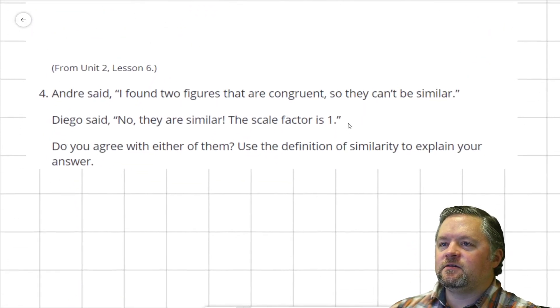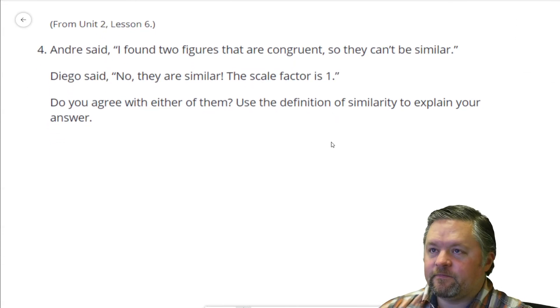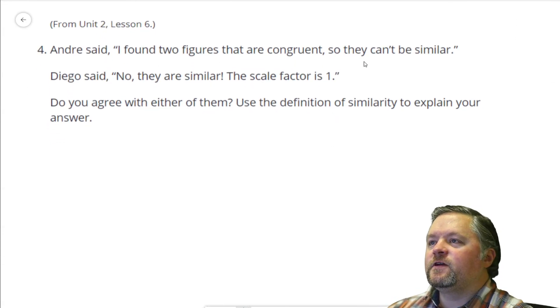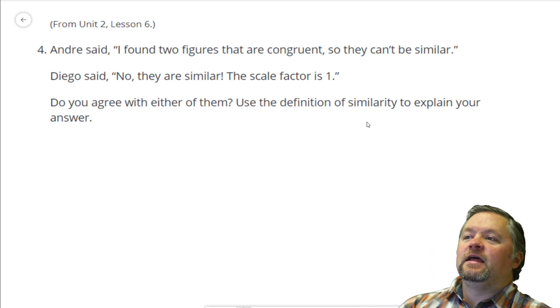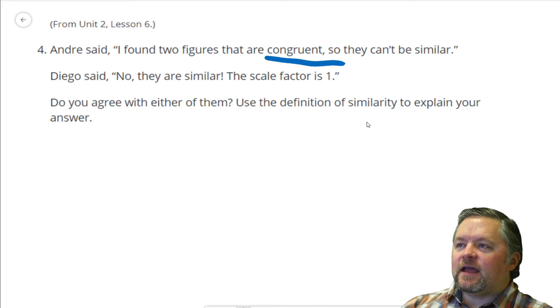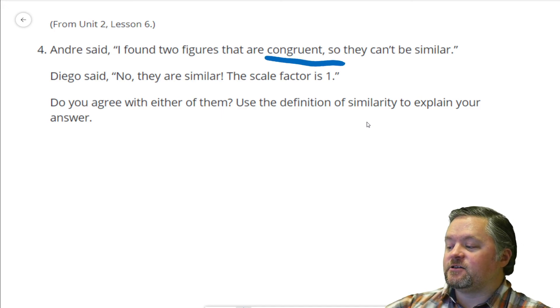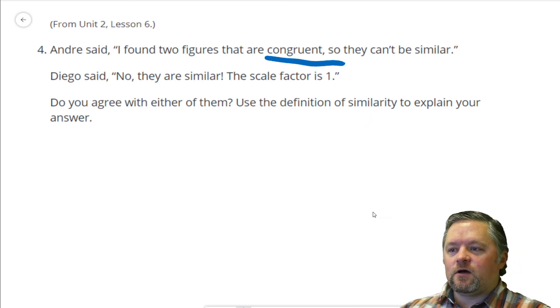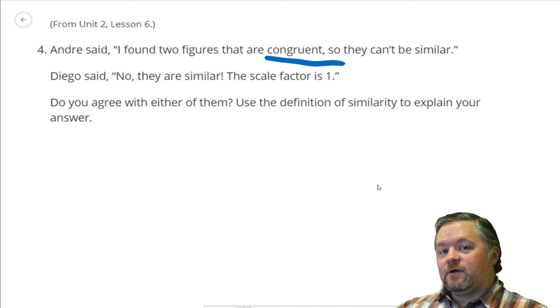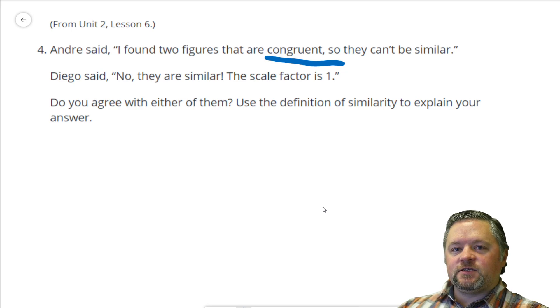What's next? Andre's talking. Andre said, I found two figures that are congruent, so they can't be similar. Diego said, No, they are similar. The scale factor is one. Do you agree with either of them? If they are congruent, they have to be similar because they're still going to have all the same angles. Our definition of similar is can we do a sequence of rotations, reflections, and dilations putting one onto the other? Yes. If they're congruent, we can do it with just rotations, reflections, and translations and not even use the dilation. So, yes, that works.